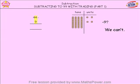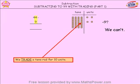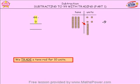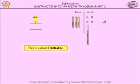We need to trade. We need to trade a tens rod for 10 units. So we put this tens rod into the units column. There it is. And now because it's in the units column we need to break it up into units. Now we have 10 individual units. This is called trading. We traded a tens rod for 10 ones or 10 units.